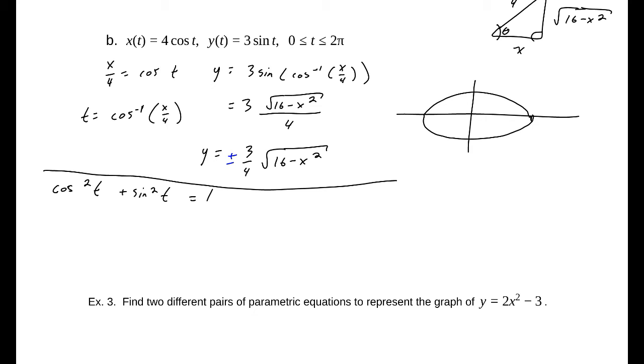If I square my x over 4 equals cosine t and my y over 3 equals sine t, I get x squared over 16 plus y squared over 9 equals 1. Which is the graph of an ellipse with a major axis of 4 and a minor axis of 3. So that exactly matches what this is. And it will in fact be oriented this way, because it's going from 0 to 2 pi, we should make a full ellipse there.